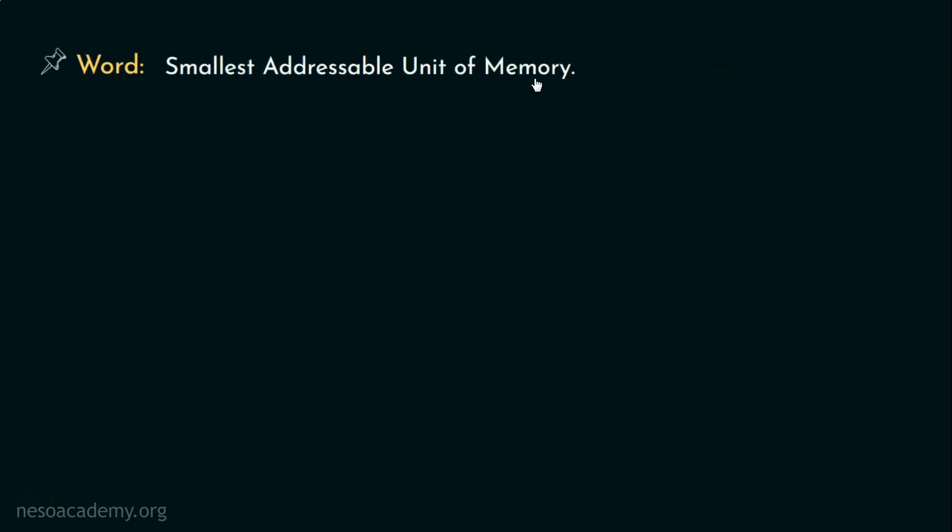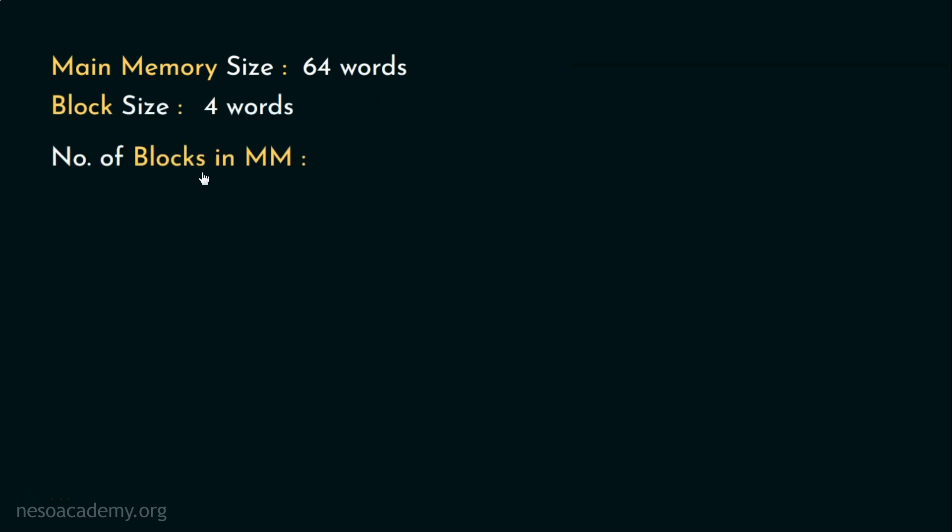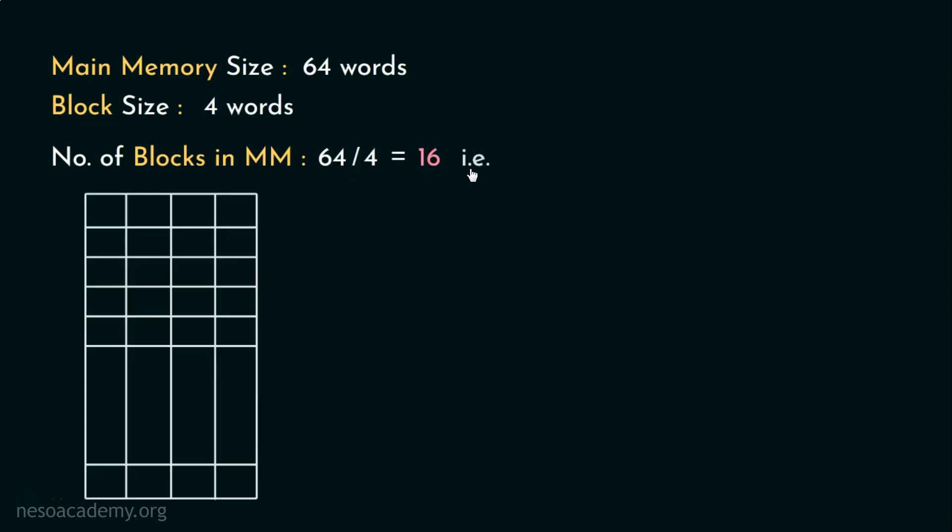A smallest addressable memory unit is called a word, and a byte addressable memory means the size of each word is 1 byte. Let's assume we have a main memory with 64 word size and the size of each block is given as 4 words. Hence, the number of blocks in the main memory is 64 by 4, that is 16. So the blocks are numbered as 0, 1, 2, 3 up to 15.